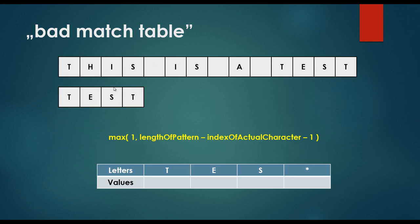We have the text and we have the pattern. We are looking for the word 'test' in 'this is a test text'. We iterate through the pattern and construct the badmatch table. There are two 'T' characters in the original pattern, but the badmatch table contains only a single 'T'. For character T at index 0: maximum of 1 and (4 minus 0 minus 1) = maximum of 1 and 3, which is 3.